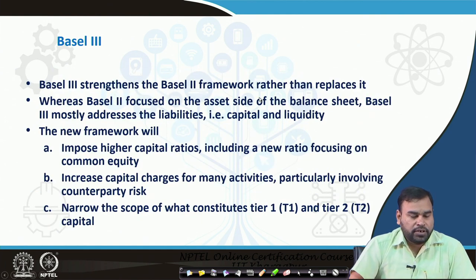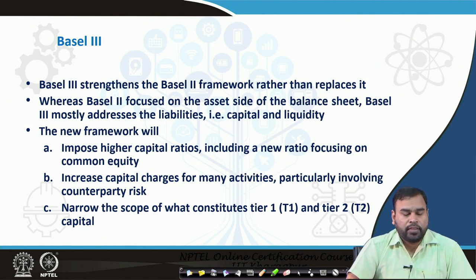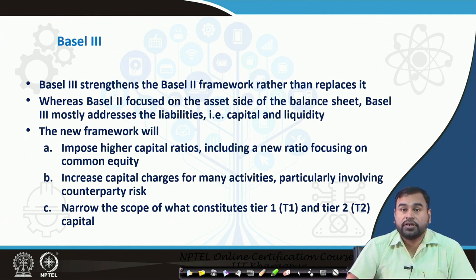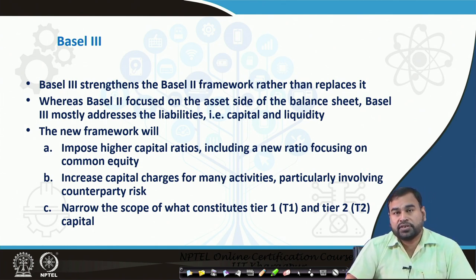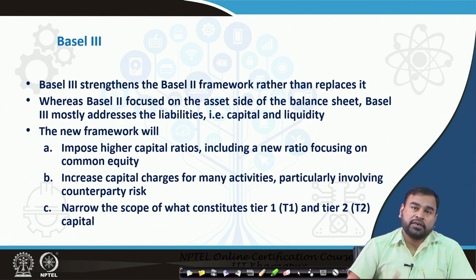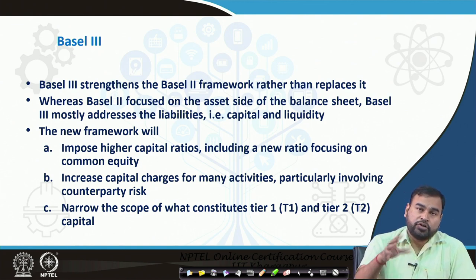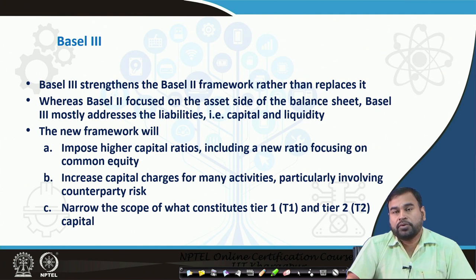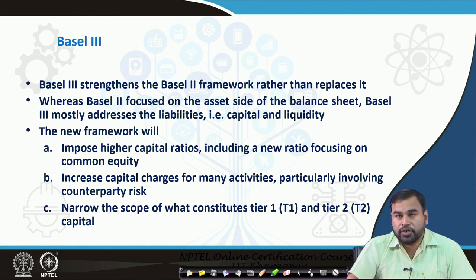Basel 3 has not replaced Basel 2 — it basically strengthens it. Basel 2 focused on the asset side of the balance sheet, but Basel 3 mostly addresses the liability side, like capital and liquidity. Basel 2 mostly highlighted risk-weighted assets and how the denominator of the capital adequacy ratio can be controlled, but in Basel 3 they try to cover up those loopholes because in Basel 2 the capital regulations were relatively less with respect to the numerator of the capital adequacy ratio.